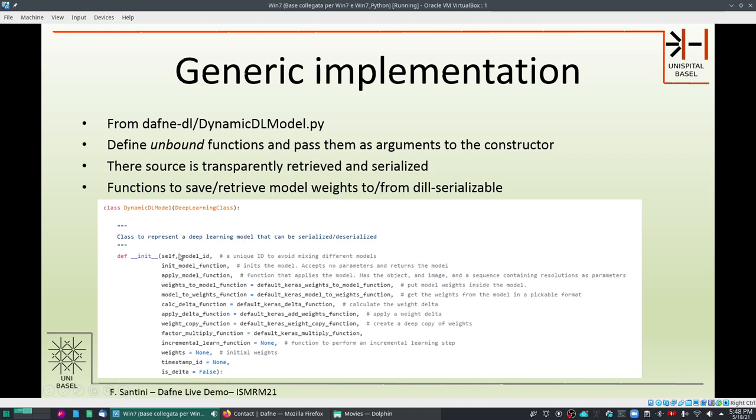So this dynamic dlmodel takes care then of taking these functions and actually transparently serializing and deserializing them. What is interesting is that the model also infers the source of these functions so that all the functions are stored as source code inside the serialized object for maximum portability.